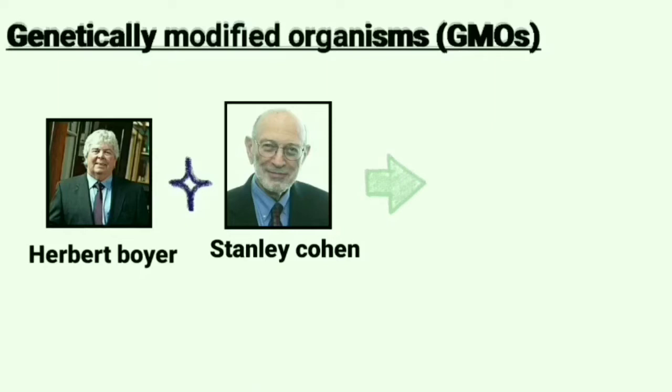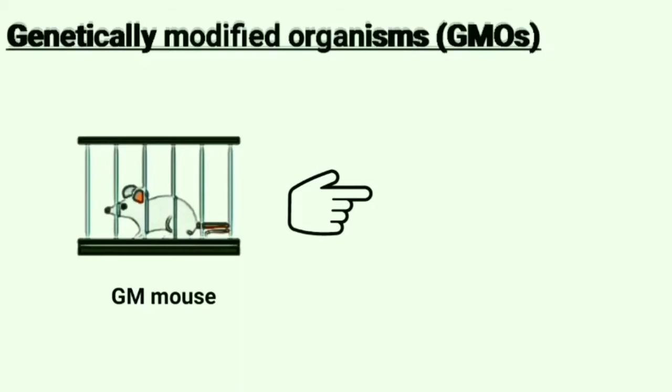In 1973, the first GMO was made by Herbert Boyer and Stanley Cohen — it was a bacteria resistant to the antibiotic kanamycin. The first GMO animal, a mouse, was created in 1974 by Rudolf Jaenisch.